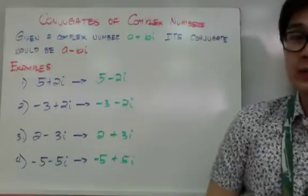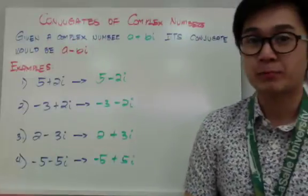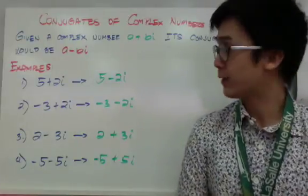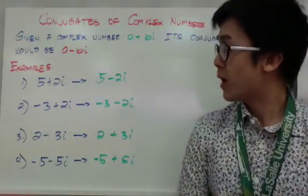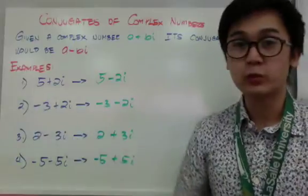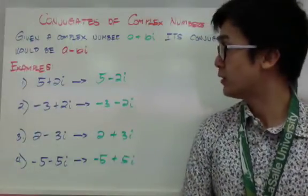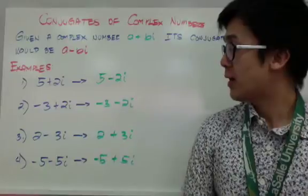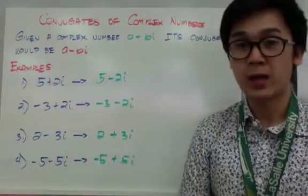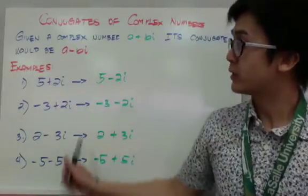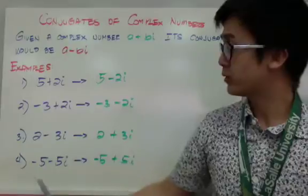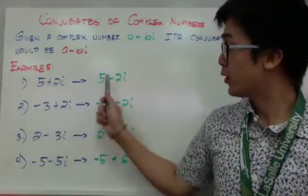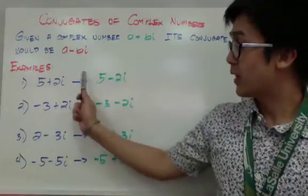Given a complex number a plus bi, its conjugate will be a minus bi. For example, if I have five plus two i, its conjugate will be five minus two i. And if I have negative three plus two i, my conjugate will be negative three minus two i. Notice that the real part will not change its sign when you're looking for its conjugate.